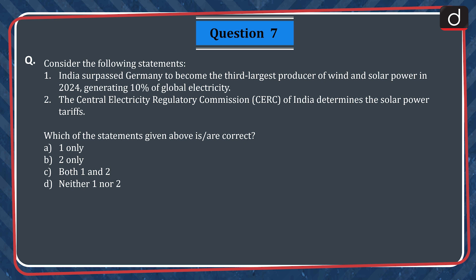Question 7. Consider the following statements. 1. India surpassed Germany to become the third largest producer of wind and solar power in 2024, generating 10% of global electricity. 2. The Central Electricity Regulatory Commission or CERC of India determines the solar power tariffs. Which of the statements given above is or are correct?